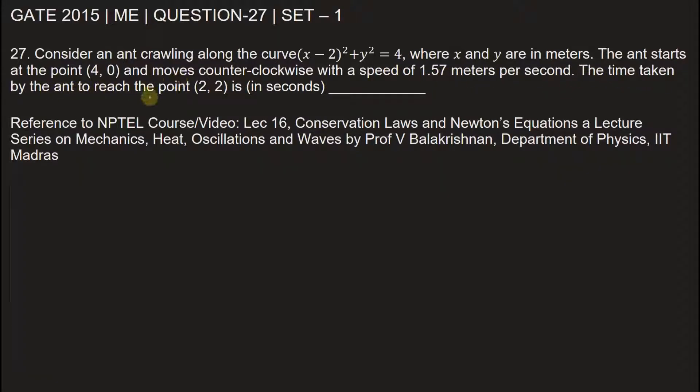The time taken by the ant to reach the point (2, 2) in seconds is the question. In the problem, it is given that the ant is crawling on the curve